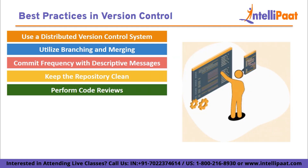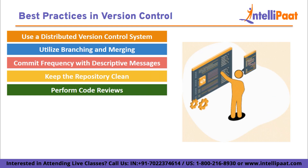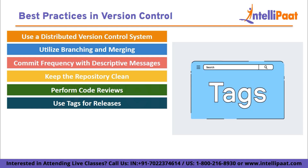Perform code reviews: code reviews help maintain code quality, identify issues, and promote knowledge sharing within the team. Pull requests or similar mechanisms facilitate the review process. Reviewers should focus on code readability, best practices, adherence to coding standards, and potential bugs or vulnerabilities. Use tags for releases: tags are labels assigned to specific commits, typically used to mark important points in development such as releases or major milestones. Applying tags allows easy navigation through the project history and provides references for stable versions.